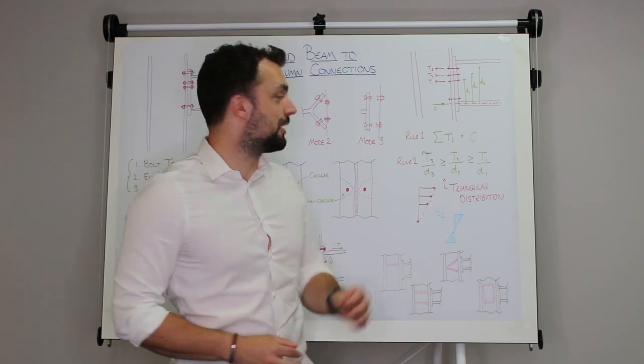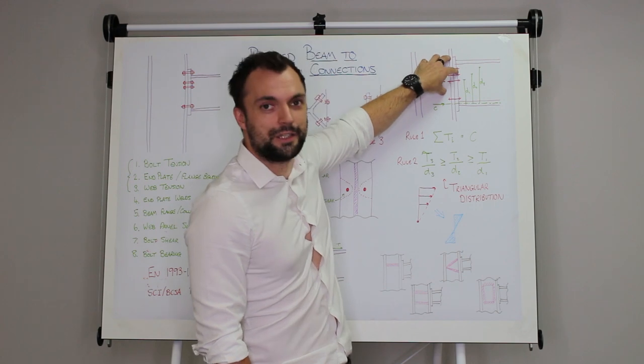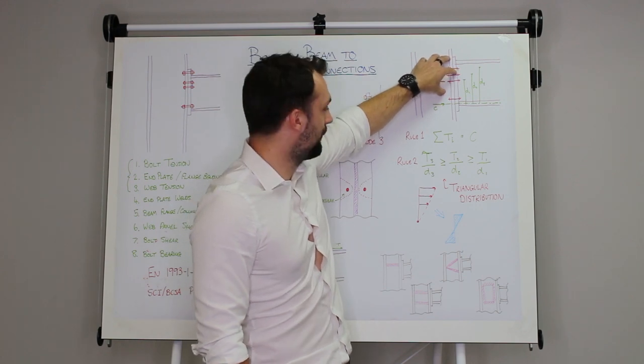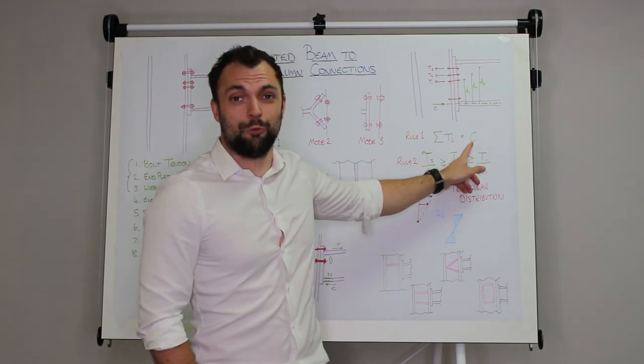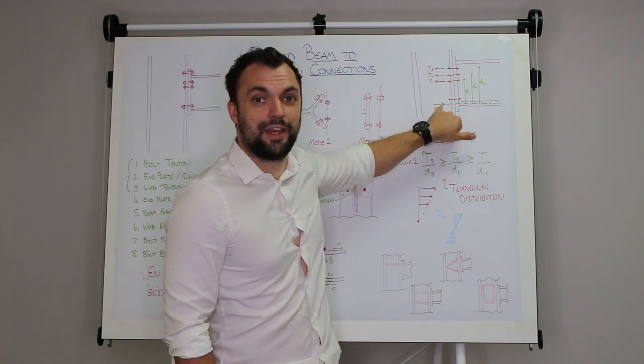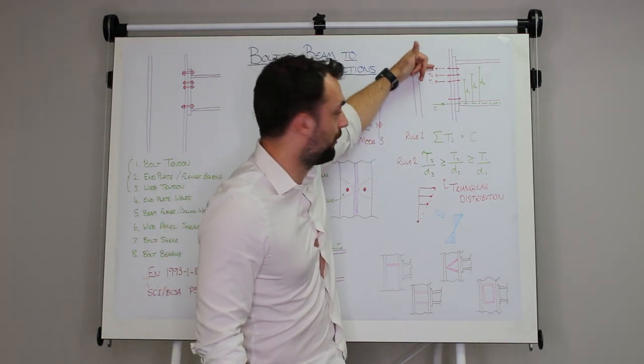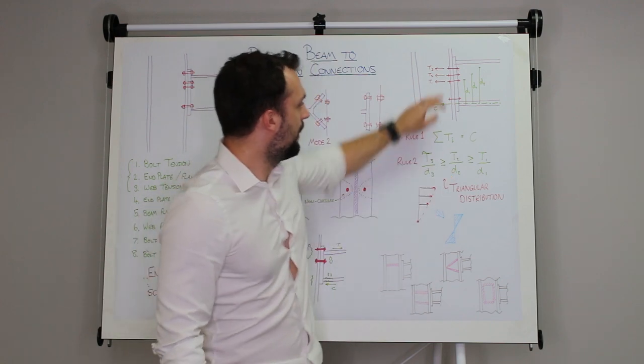Now it's important that that compression at the bottom balances with the tension at the top. Well not only that, you might be looking at a slightly different distribution of forces that means you can't get the complete tension resistance out of all of these bolts. You've got two rules: the tension must be equal to the compression, so this flange and this web here must be able to take compression equal to the sum of all the tensions you've applied at the top.